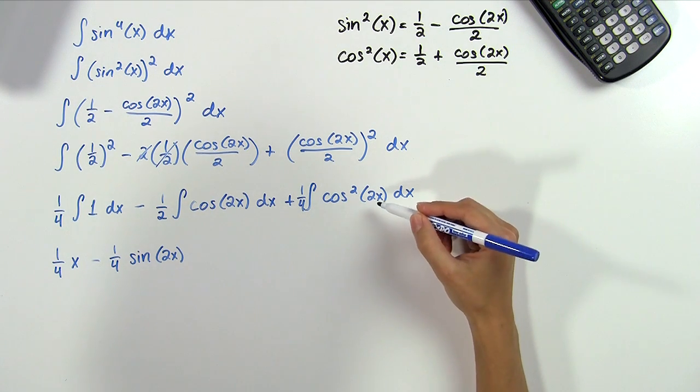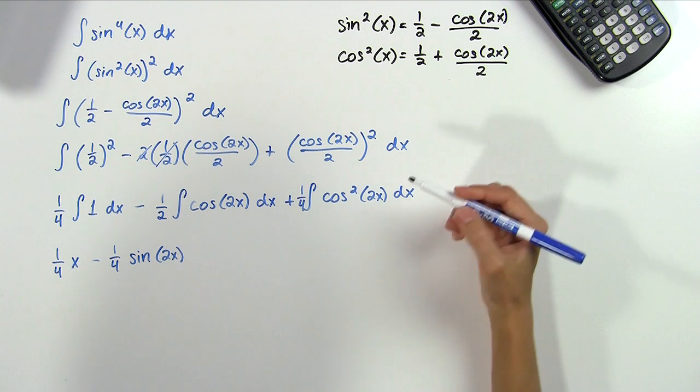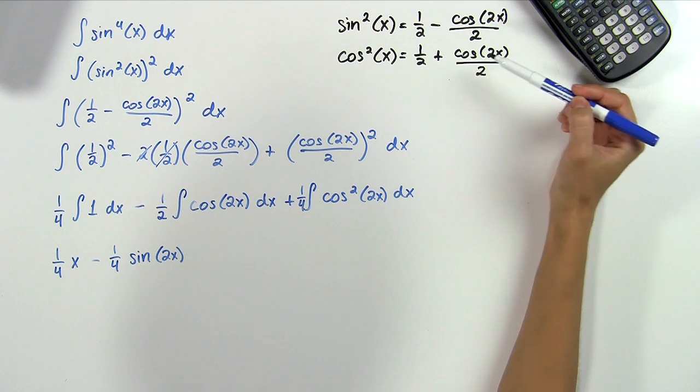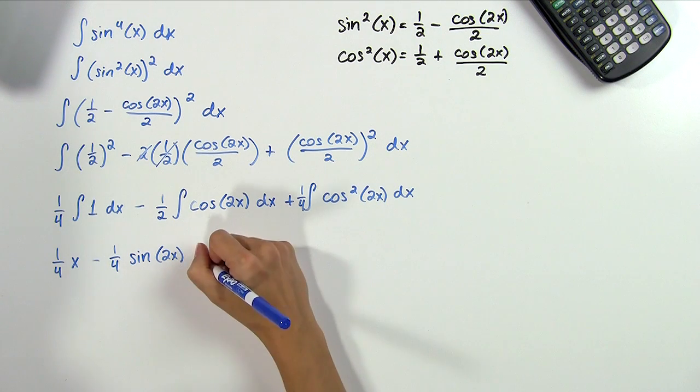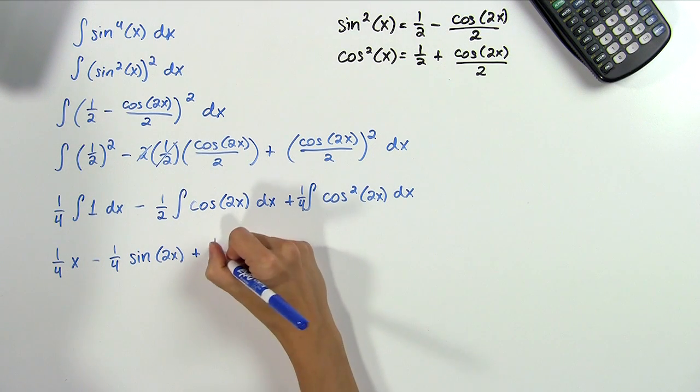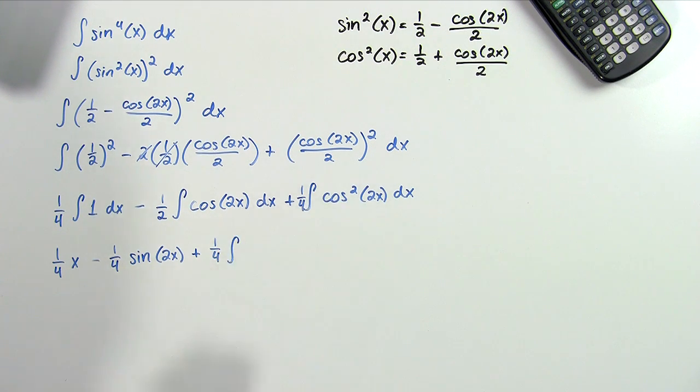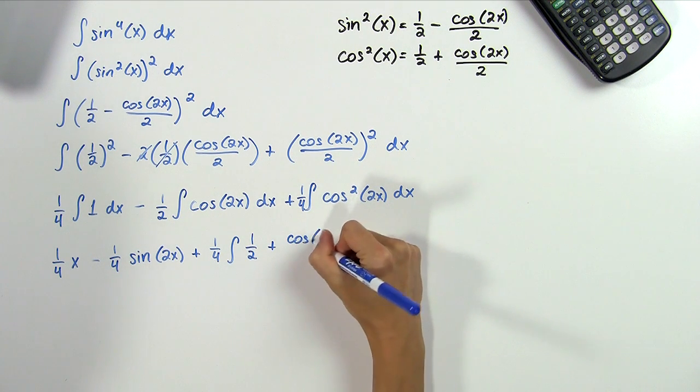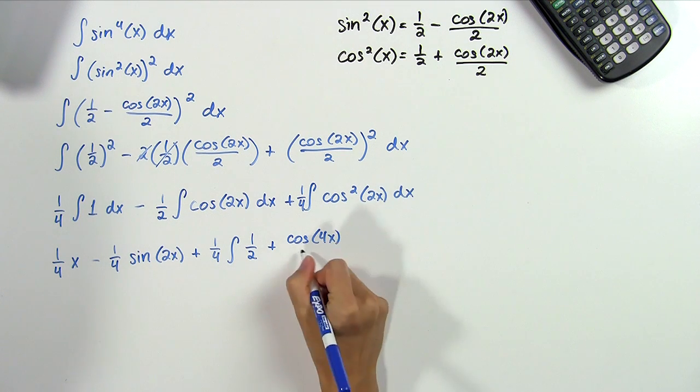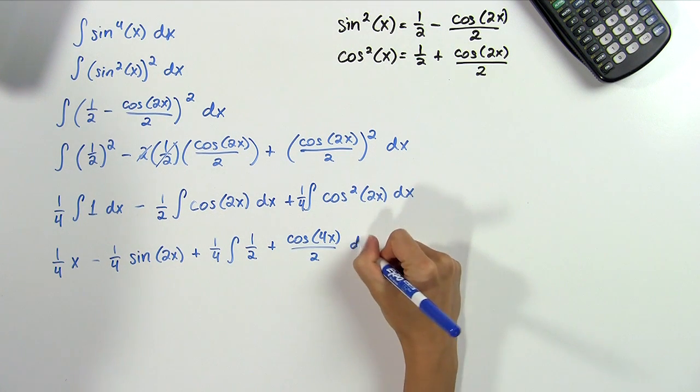Here we have the cosine squared of 2x so we'll need to make sure we're consistent and replace x with 2x everywhere in this equation. So that will give us plus 1 fourth times the integral of 1 half plus cosine of 4x divided by 2 dx.